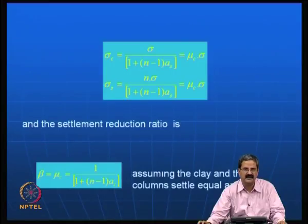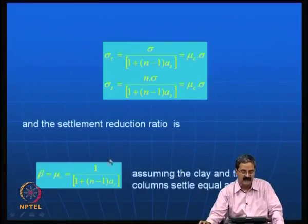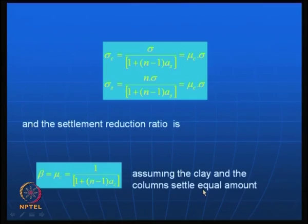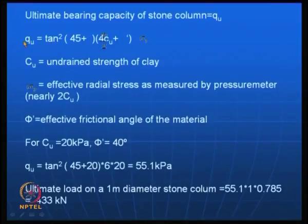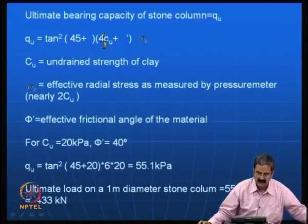When a load is applied, both the clay and stone column settle equally, but in the process the stone takes more load compared to clay. For a simple calculation example: the ultimate bearing capacity of the stone column is given by an expression involving π/2 × Cu and σr, where Cu is the undrained shear strength of the clay and σr is the effective radial stress as measured by the pressure meter. Using an undrained shear strength of 20 kPa and a stone material with a friction angle of 40 degrees, you get an ultimate bearing capacity of about 51.1 kPa — increasing from 20 kPa to over 50 kPa with the use of stone.